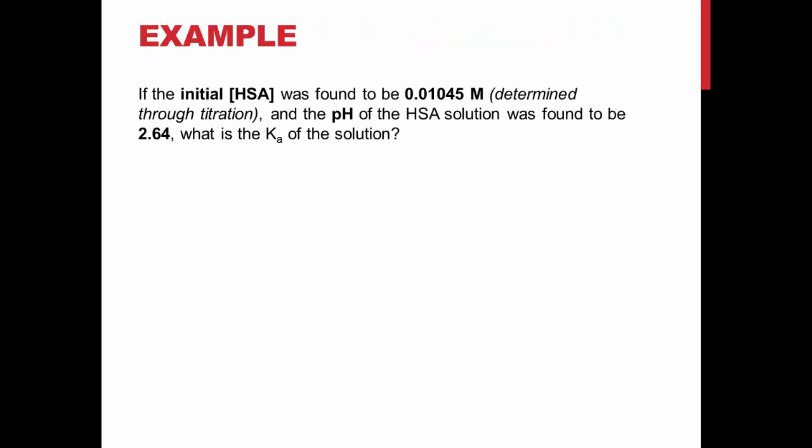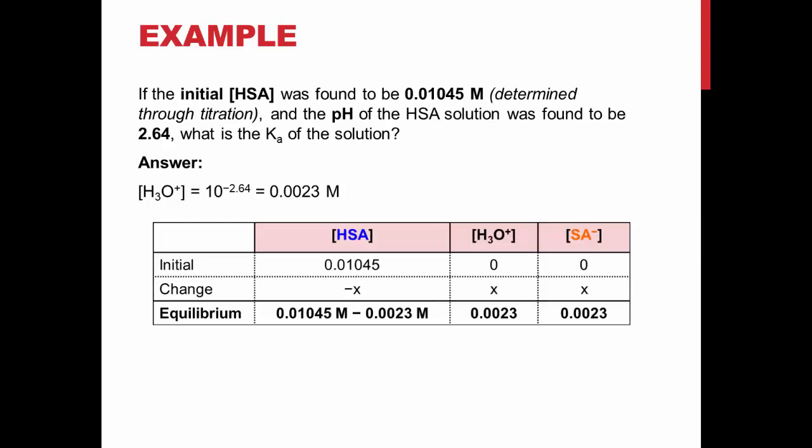Here is an example of how to calculate an equilibrium constant from pH values. The pH is measured 2.64. 10 to the power of negative 2.64 gives us a molarity of 0.0023. This is equal to the concentration of H3O+ and SA-. Note that this value has only two sig figs.